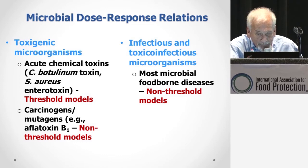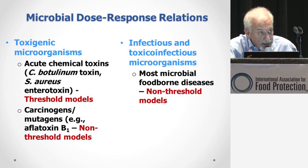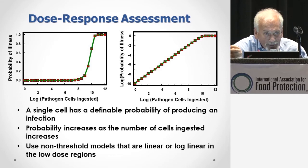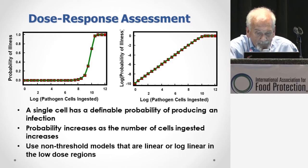For infectious and toxico-infectious microorganisms — which are most of the types of organisms we're going to be talking about in terms of food safety — these are all non-threshold models. What we have is individual organisms that have the capability of reproducing, and you have the potential for a single cell, if it gets into the right place at the right time, to have a definable probability of producing an infection.